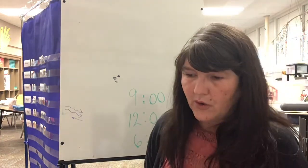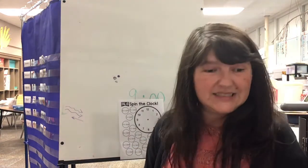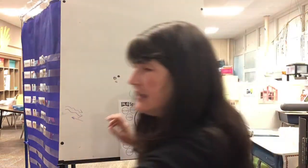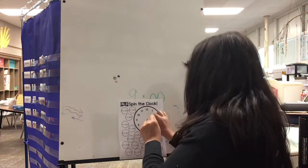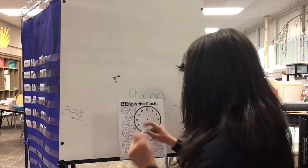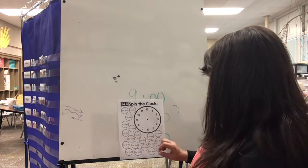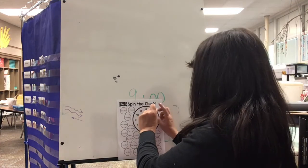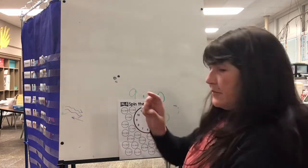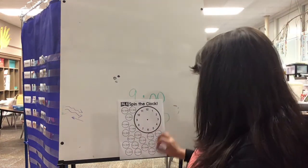Now I'm going to practice with the game Spin the Clock. I was spinning the clock and let's say it lands on nine. If it lands on nine I need to cover nine o'clock. Spin. It lands on two. Put a penny on two o'clock.